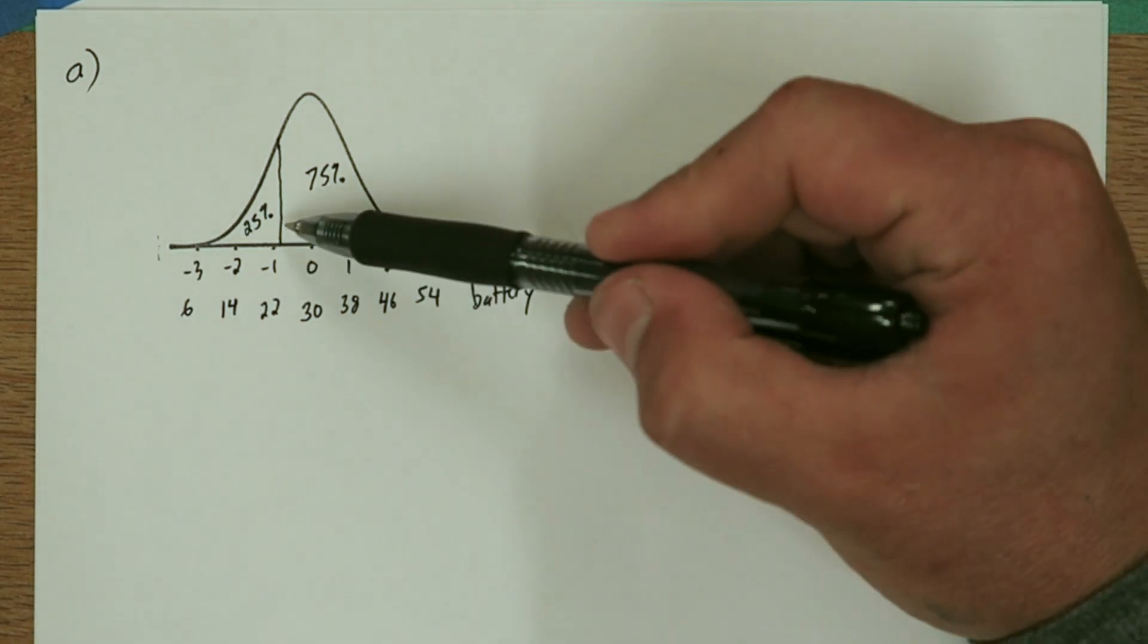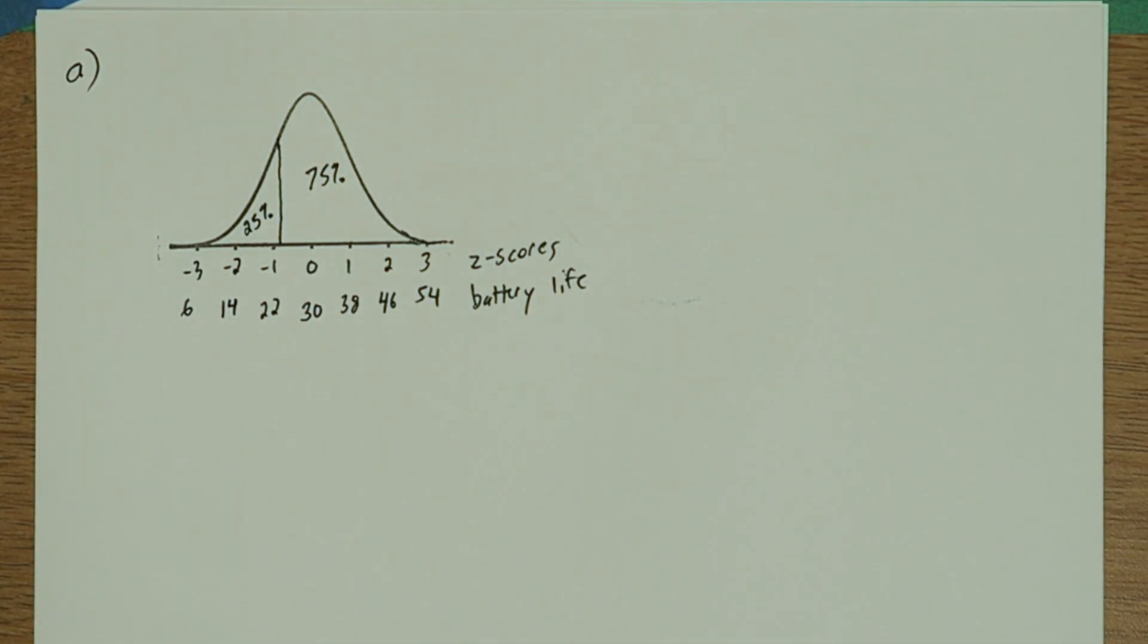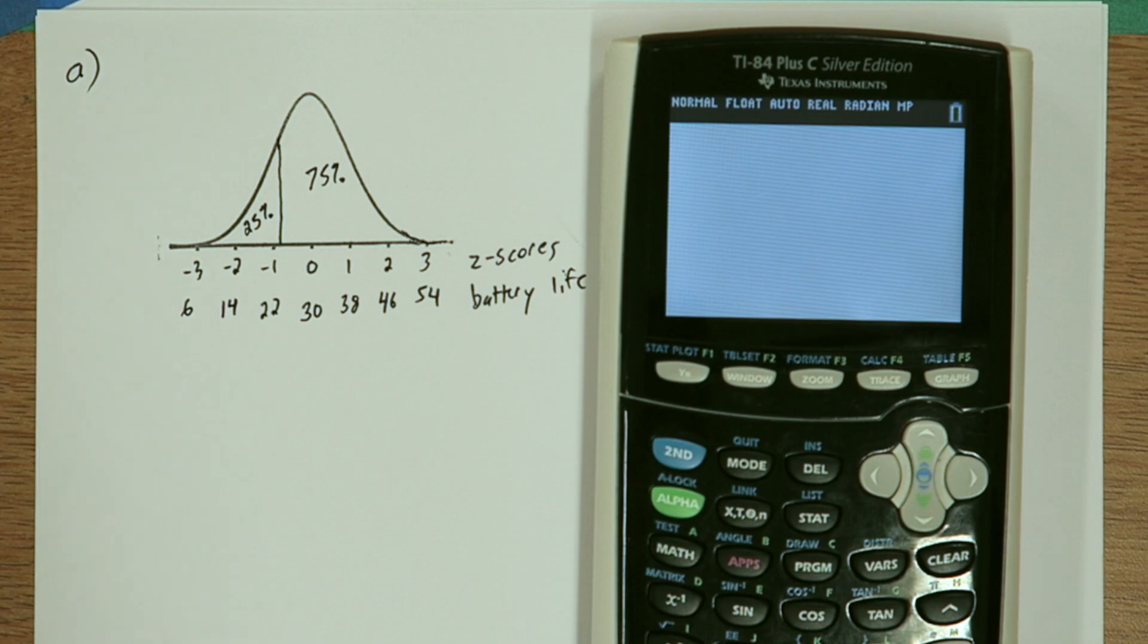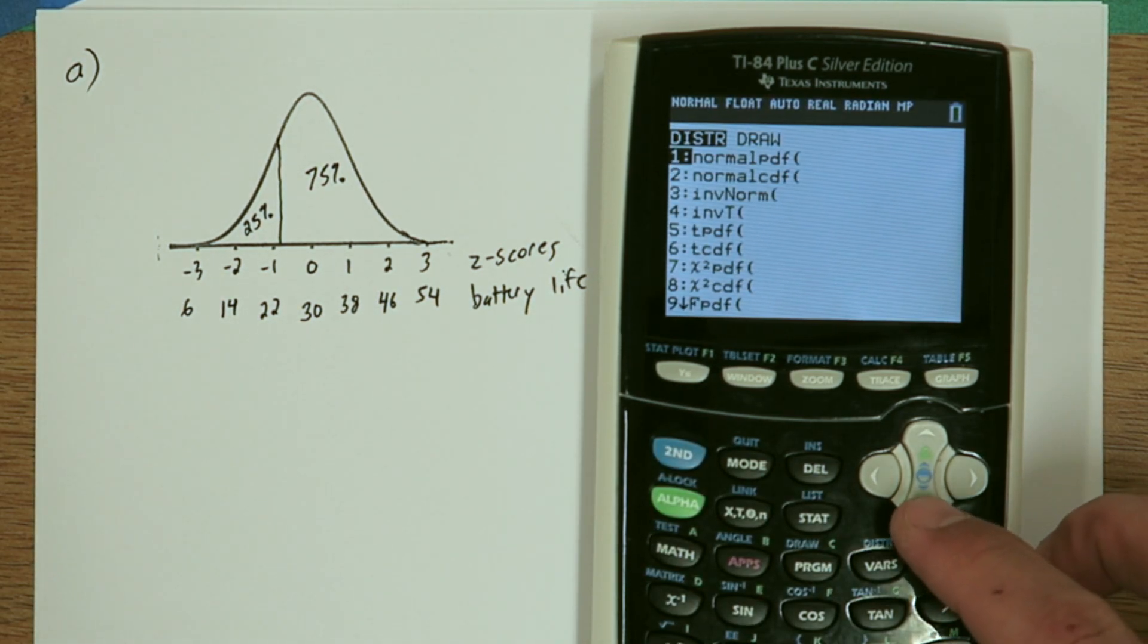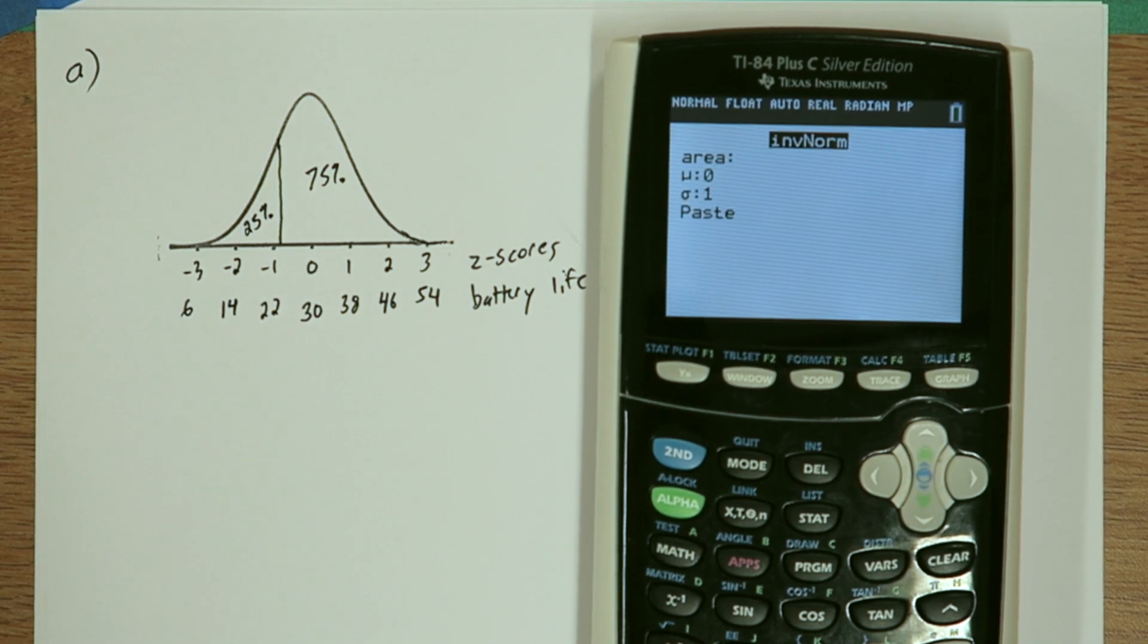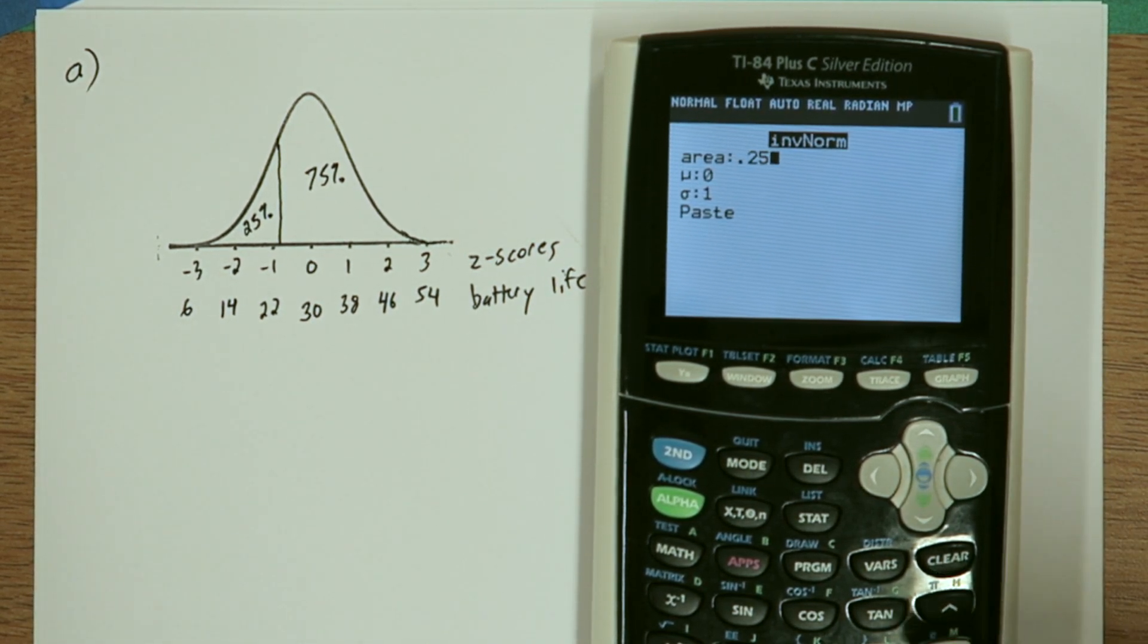So now let's figure out what cuts off exactly the lower 25%. To do this we're going to use the calculator and if we go to 2nd VARS and go to inverse norm it says what area are you interested in cutting off? 0.25.